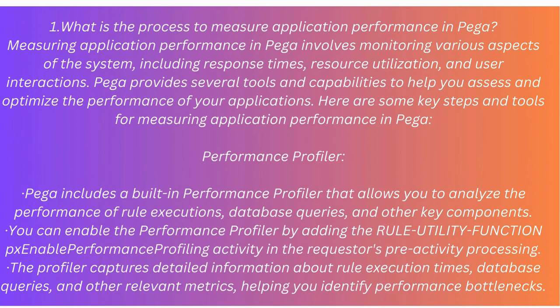Question: What is the process to measure application performance in PEGA? Answer: Measuring application performance in PEGA involves monitoring various aspects of the system, including response times, resource utilization, and user interactions. PEGA provides several tools and capabilities to help you assess and optimize performance. Performance Profiler: PEGA includes a built-in performance profiler that allows you to analyze the performance of rule executions, database queries, and other key components. You can enable it by adding the rule utility function PX Enable Performance Profiling activity in the requester's pre-activity processing. The profiler captures detailed information about rule execution times, database queries, and other relevant metrics, helping you identify performance bottlenecks.